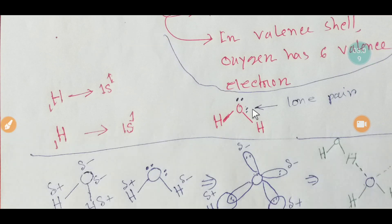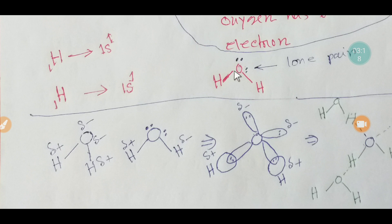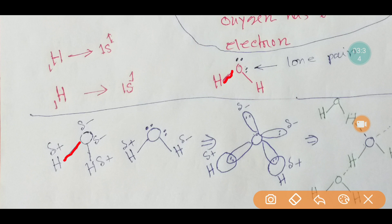This is the Lewis structure of water. You have to bear in mind that the oxygen-hydrogen bond is polar. The oxygen-hydrogen bond is polar because the electronegativity of oxygen is greater than that of hydrogen. So we get δ+ on hydrogen and δ− on oxygen. Both O-H bonds are polar.